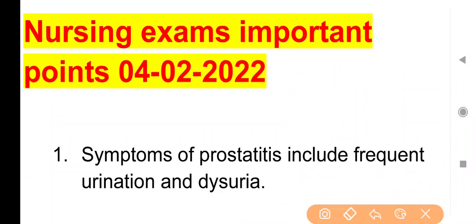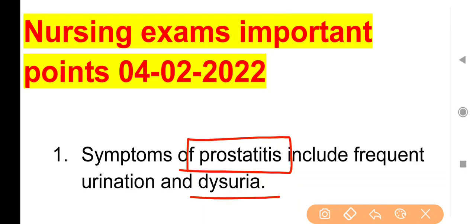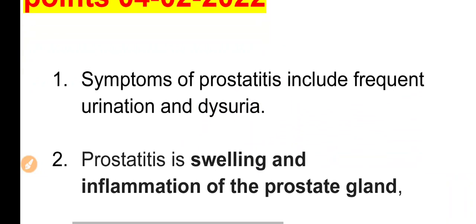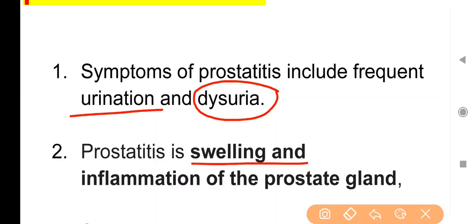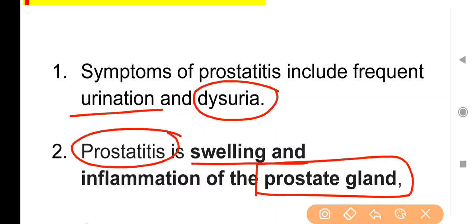Point No. 1: Symptoms of Prostatitis include frequent urination and dysuria. जिन लोगों को Prostatitis condition होती है, उन्हें बार-बार urine pass करने की इच्छा होती है और जब वो urine pass करते हैं तो उन्हें difficulty feel होती है, pain feel होता है। Prostatitis is a swelling and inflammation of the prostate gland — a P-shaped gland found below the urinary bladder in males.